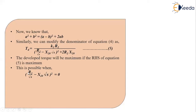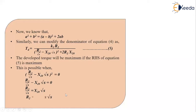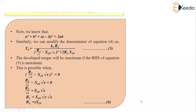Taking the square root of both sides of that condition: R2/√S − X20·√S = 0, so R2/√S = X20·√S. Bringing √S across: R2 = X20·S·(√S/√S) = S·X20. Therefore R2 = S·X20, which is equation number 6 — the condition for maximum torque.